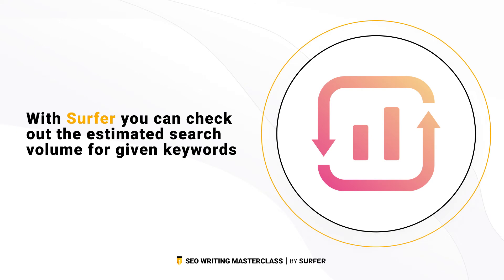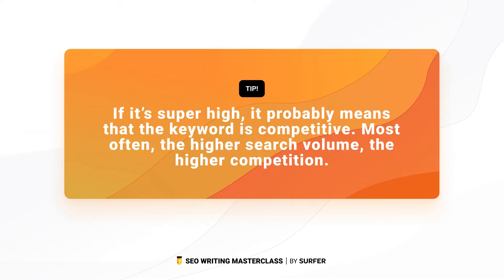With Surfer, you can check out the estimated search volume for given keywords. If it's super high, it probably means the keyword is competitive — the higher the search volume, the higher the competition. The more people search for something, the more sales or ad commission you can make. Search volume analysis can also help you pick low-competition keywords. And don't forget what I mentioned in the previous lesson: you can use Surfer to build your entire content strategy with amazing filter options to check volume and search intent.